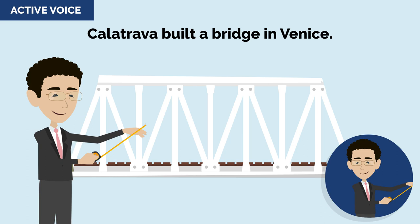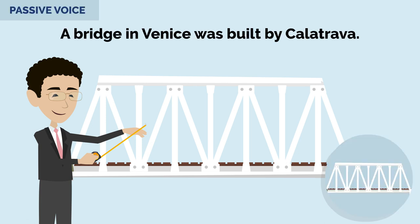Active voice: Calatrava built a bridge in Venice. Passive voice: A bridge in Venice was built by Calatrava.